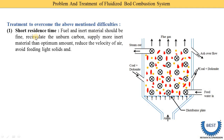Fuel and inert material shall be made finer, meaning their size should be smaller. Recirculate the unburned carbons — if unburned carbon particles remain, we need to arrange a system to recirculate them. Supply more inert material than the optimum amount — there is a fixed ratio for coal and dolomite, but we need to supply more inert materials than the optimum value. Reduce the velocity of air, because if the air velocity is higher, the residence time of the fuel is reduced.